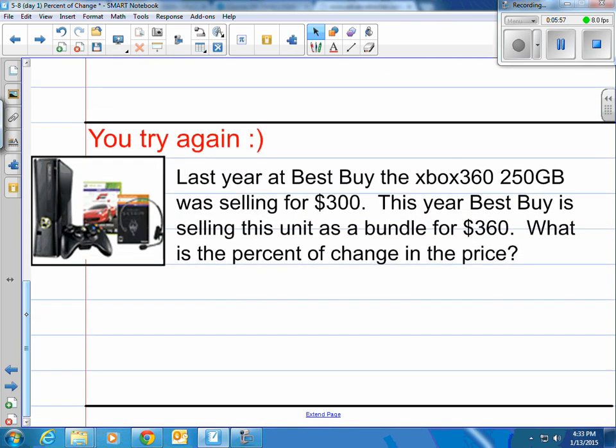How about you try it again here? It says last year at Best Buy, the Xbox 360 250 gigabyte was selling for $300. This year Best Buy is selling this unit as a bundle with all the stuff you see there in the picture for $360. What is the percent of change in the price?